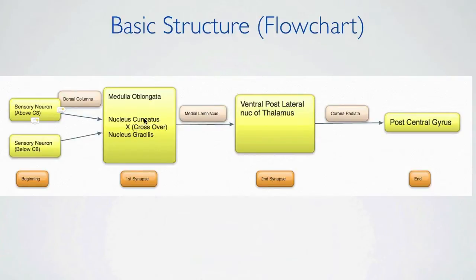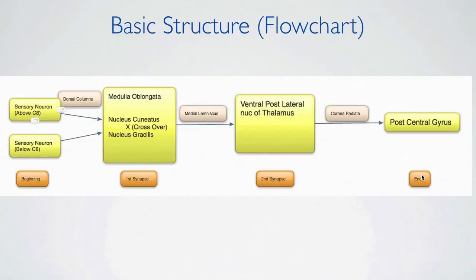Here the fibers will cross over and ascend through the medial lemniscus to end in the ventral post-lateral nucleus of the thalamus — this is the second synapse. Finally, these neurons will send their fibers through the corona radiata and end in the post-central gyrus of the parietal cortex.